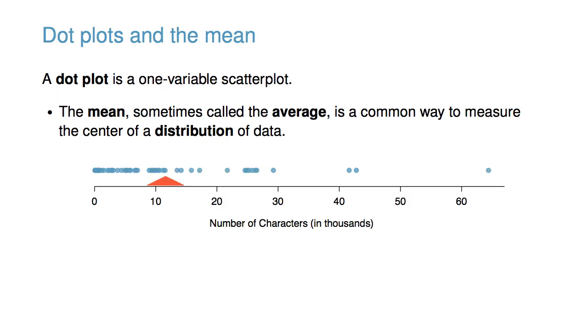A dot plot is a one-variable scatter plot. The mean, sometimes called the average, is a common way to measure the center of a distribution of data.